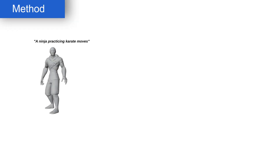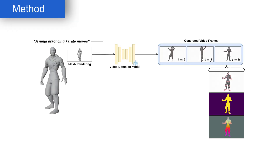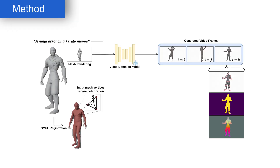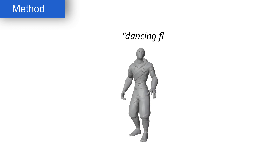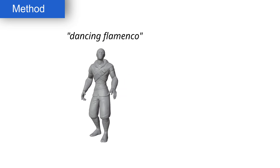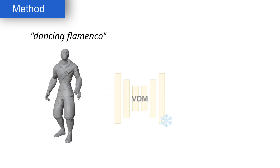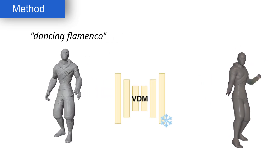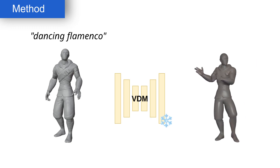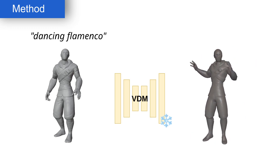From an input mesh, we generate its corresponding video, then register SMPL to the mesh for tracking, and finally optimize for motion transfer to the mesh. We first render the input mesh and use the rendered image along with a text prompt to condition a video diffusion model and generate a video of the mesh performing the described motion.